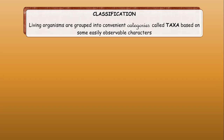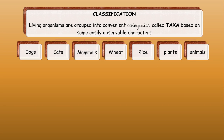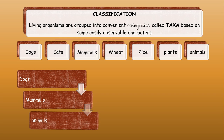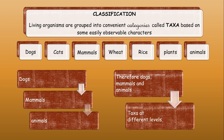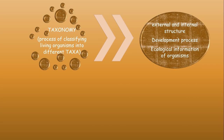Living organisms are grouped into convenient categories called taxa, based on easily observable characters — this is known as classification. Dogs, cats, mammals, wheat, rice, plants, and animals each represent a taxon. Dogs ultimately come under mammals, which come under animals, so dogs, mammals, and animals represent taxa at different levels. Taxonomy is the process of classifying living organisms into different taxa based on external and internal structure, development processes, and ecological information.